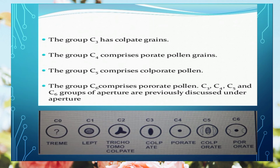C3 type pollen grains have colpi — slit-like openings. C4 type pollen grains have a pore in the center, but no colpi as you can see in the diagram. The pore is simple, oval or circular in nature. The C5 group has both colpi and a pore together, so we use the term 'colporate'. In C6, there are more than one pores, so we use the term 'porate'.